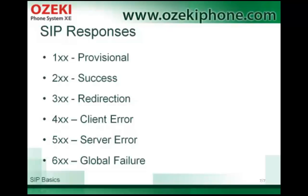Redirectional responses inform about the relocation of users. In case of client and server error, the clients and servers have some failure. And finally, global failure responses indicate that a server has information about the user.